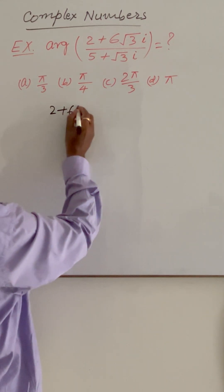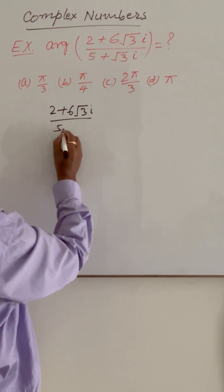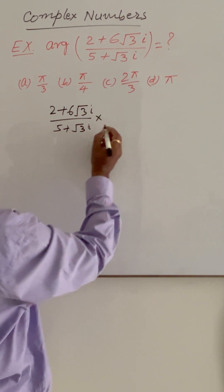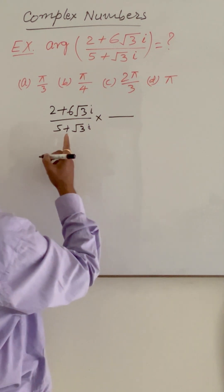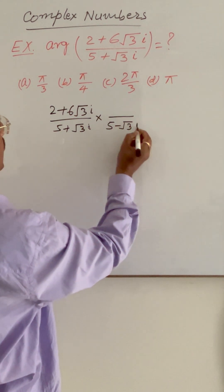Here given 2 plus 6 root 3i upon 5 plus root 3i. Let us multiply numerator and denominator by the conjugate of the denominator which is 5 minus root 3i.